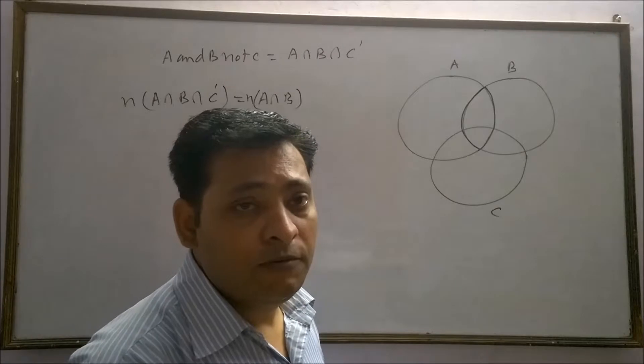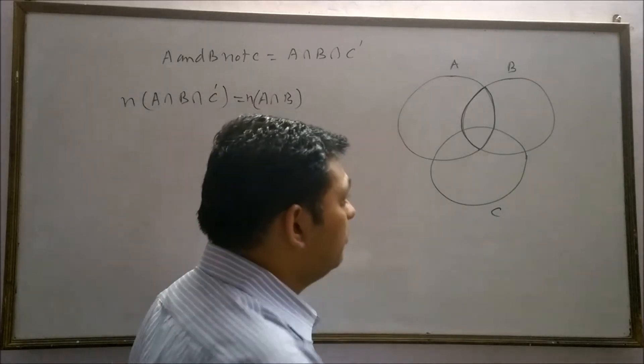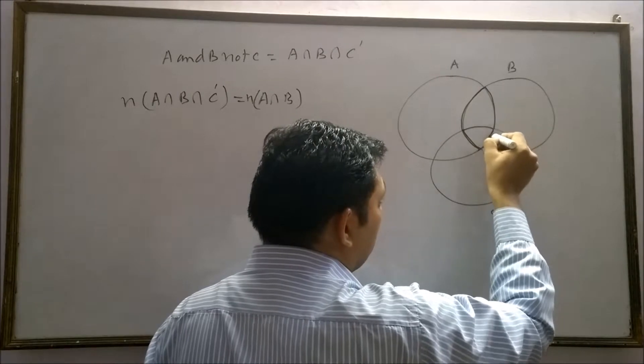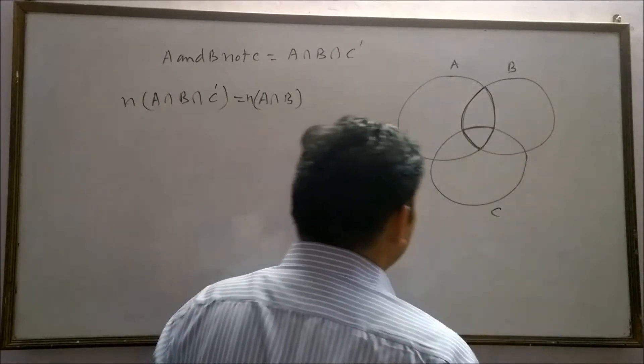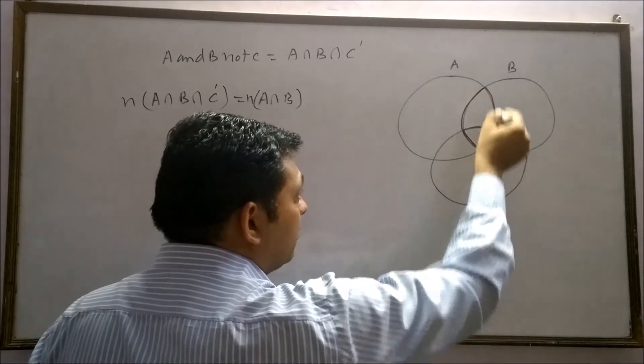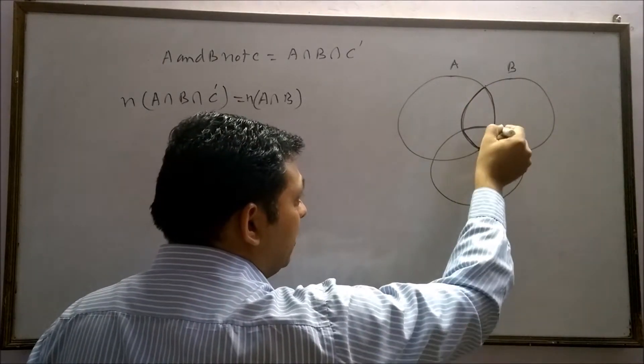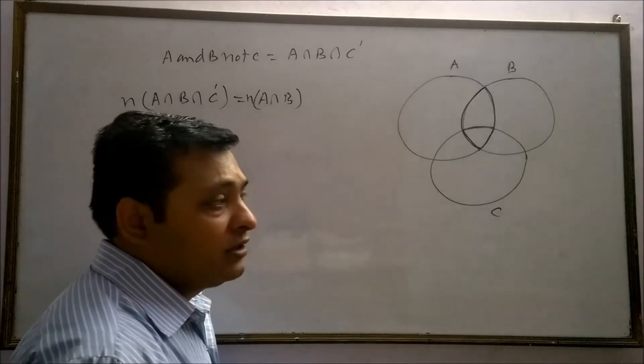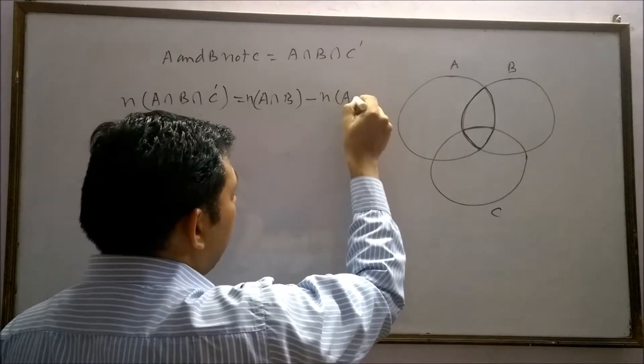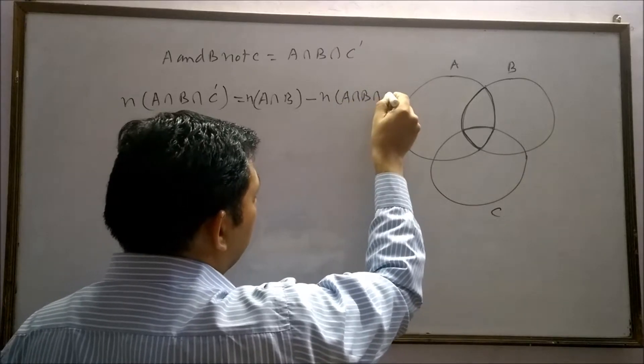Elements of C can be found in this region, and this is our A intersection B intersection C region. So we have to remove from A intersection B this part, that is A intersection B intersection C. Therefore, n(A∩B∩C') = n(A∩B) - n(A∩B∩C).